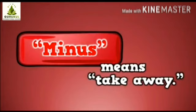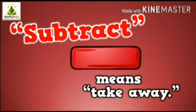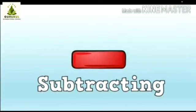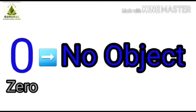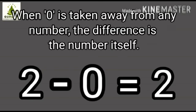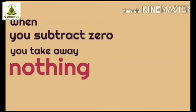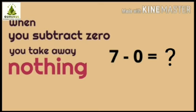Minus means take away, and subtract also means take away. What does a minus sign look like? It looks like a sleeping line. This is called subtracting from a bigger number to a smaller number. Now, as we learned, zero means no object. When zero is taken away from any number, the difference is the number itself. When you subtract zero, you take away nothing — nothing means zero. So seven minus zero — what will come? The same number.